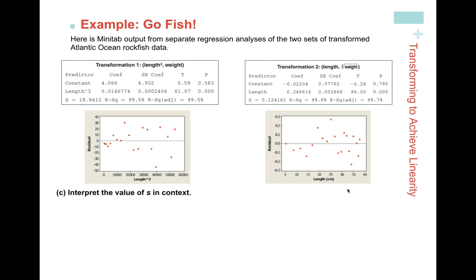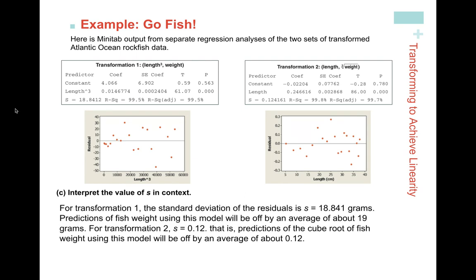Now let's interpret the value of S in context. S is the standard deviation of the residuals. For Transformation 1, S = 18.8412, meaning predictions of fish weight using this model will be off by an average of about 18.841 grams. For Transformation 2, S = 0.12, meaning predictions of the cube root of fish weight using this model will be off by an average of about 0.12.